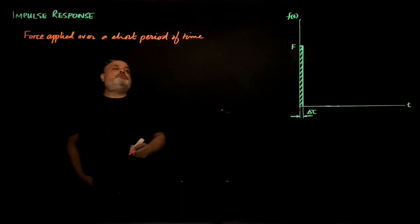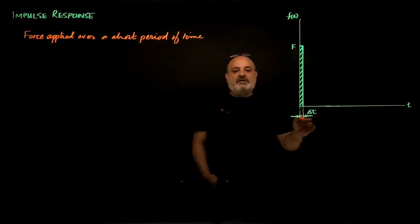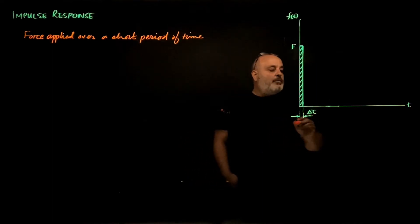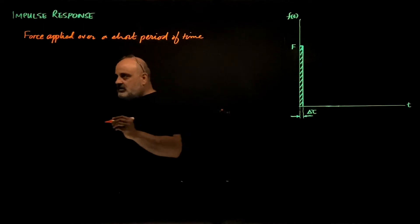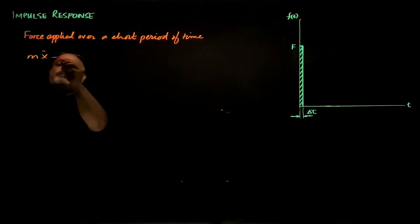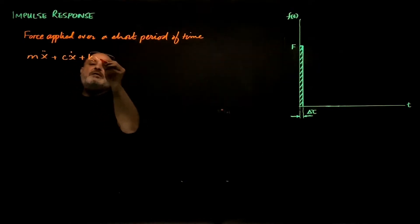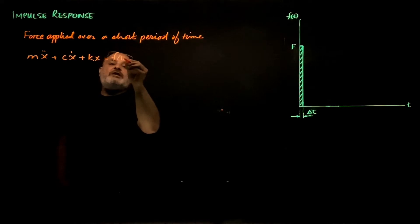To determine the response of a single-degree freedom system to an impulse, first let's consider the system mx double dot plus cx dot plus kx equals f of t.